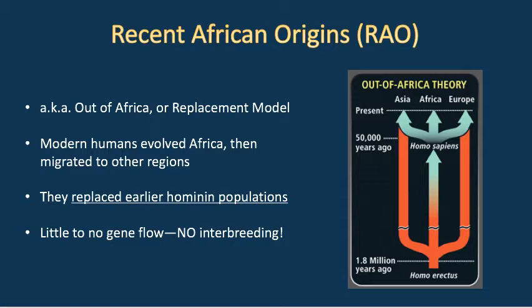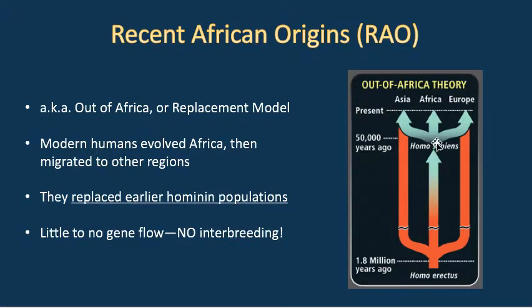Recent African Origins holds that we have a more recent African origin. We do have the original migration out of Africa by Homo erectus at 1.8 million years ago, with populations moving into Asia and Europe. At some point, the African Homo erectus population evolves into modern humans. Those modern humans then migrate out again and repopulate all of these other parts of the world, eventually replacing those old Homo erectus populations. In the strictest version, there's no interbreeding between species — humans come in and replace those old populations.